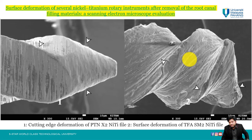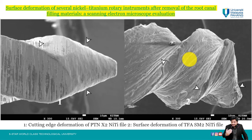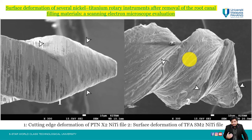This is what defines surface integrity — the features that occur before manufacturing, during the service lifetime, and at the cessation of its use. It gives us a lot of information about the performance of the material and how it performed its function, which in this case was to remove dental pulp and bacteria.